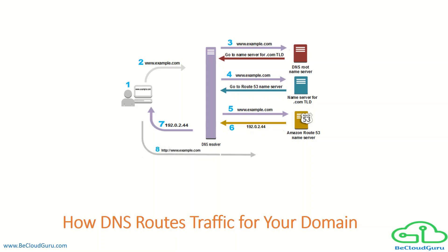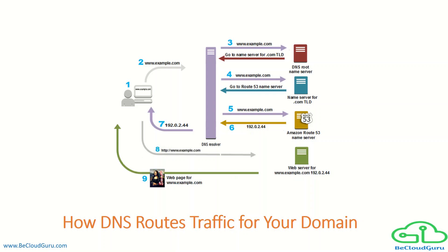The content at that IP address — for example, a web server running on an Amazon EC2 instance or an Amazon S3 bucket configured as a website endpoint — returns the web page for www.example.com to the web browser, and the browser displays the page. This was the basic DNS functionality that happens when you try to access any URL.